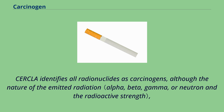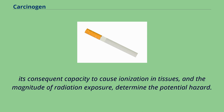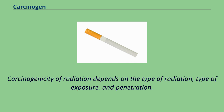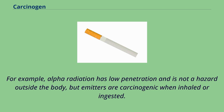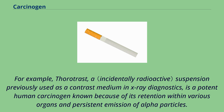IARC identifies all radionuclides as carcinogens, although the nature of the emitted radiation, its consequent capacity to cause ionization in tissues, and the magnitude of radiation exposure determine the potential hazard. Carcinogenicity of radiation depends on the type of radiation, type of exposure, and penetration. For example, alpha radiation has low penetration and is not a hazard outside the body, but emitters are carcinogenic when inhaled or ingested. Thorotrast, a suspension previously used as a contrast medium in x-ray diagnostics, is a potent human carcinogen because of its retention within various organs and persistent emission of alpha particles.